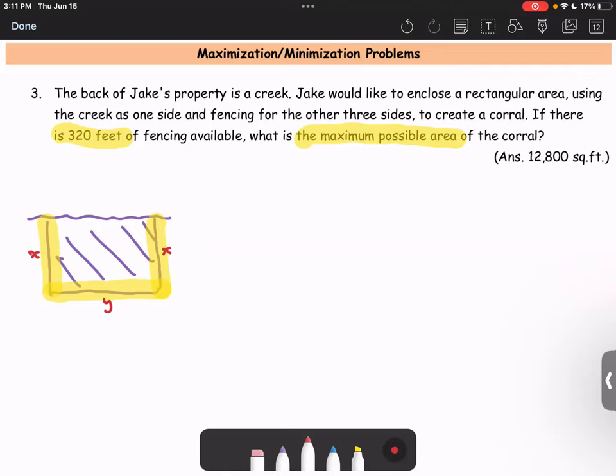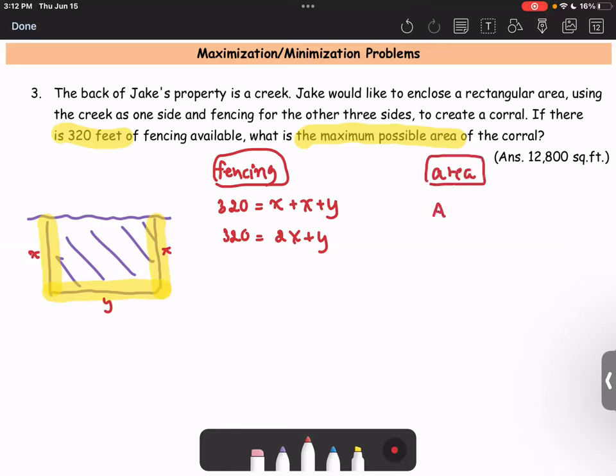For the 320 feet of fencing available, that is the sum of 2x and y, or we can say 320 equals 2x plus y. We are going to look at the maximum area. When we talk about the area of the rectangle, the formula is A equals length times width, which is x times y.